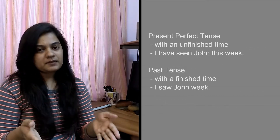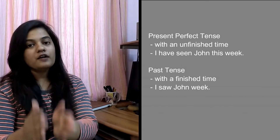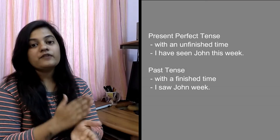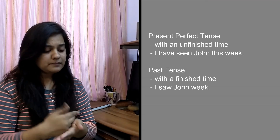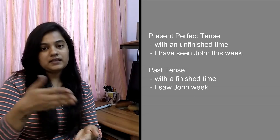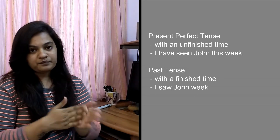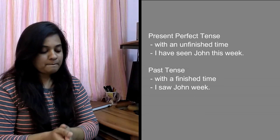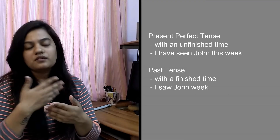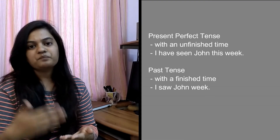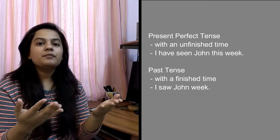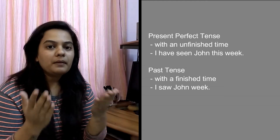Unfinished time means this week, this month, today, etc. But finished time means last week, which is over, or last month, or yesterday — the day is over. So at that time you use simple past tense. The example of present perfect tense is: I have seen John this week. And the example of simple past tense is: I saw John yesterday.